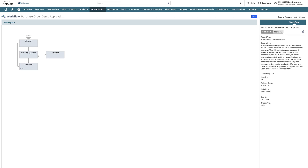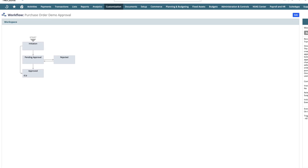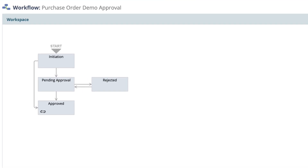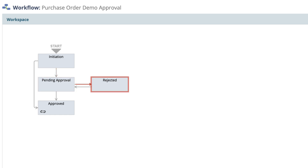Each workflow is graphically represented, so it's easy to follow. In this example, it begins with the initiation, moves to pending approval with a rejection and an approval path.